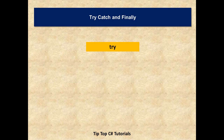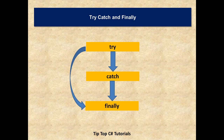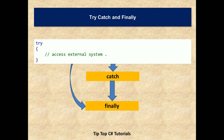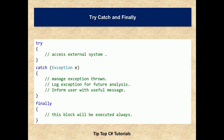Let's understand how the try, catch, and finally control flow works. First is the try block where you write external system code. It goes to the catch block whenever an exception occurs, and once done with exception handling it goes to the finally block — this is the normal flow when an exception happens. In most cases if no exception occurs, the control goes directly from try to finally. The code looks like: try { access external system }, catch (Exception e) { manage exception, write to log or inform user }, finally { this block executes always, irrespective of whether catch was executed or not }.